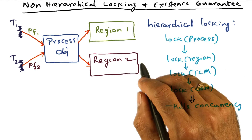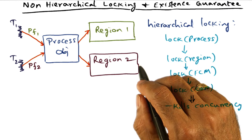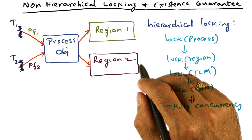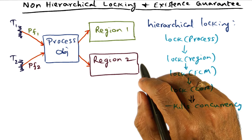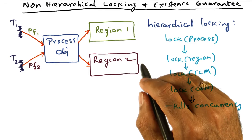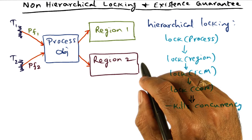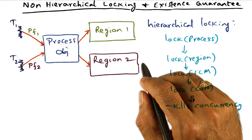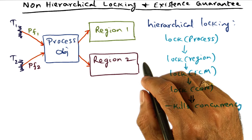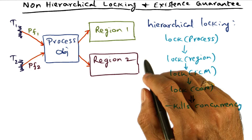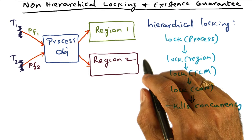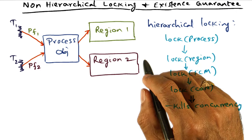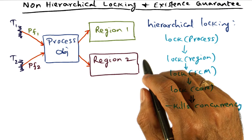Let's return to our memory management subsystem. The whole idea of objectization of the memory management subsystem, or any subsystem for that matter, is to increase the concurrency for system services that we're going to offer for the threads executing on the processors. In the memory management subsystem, the main service that we're offering is the page fault service.